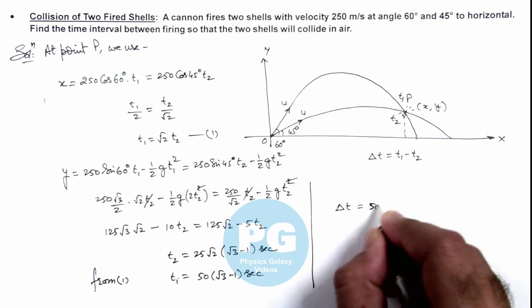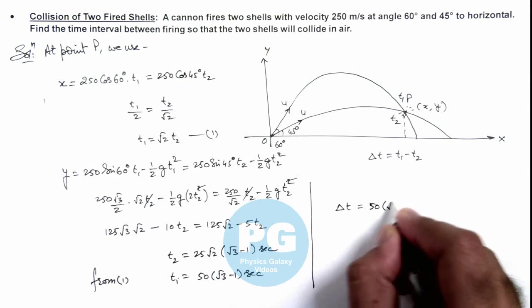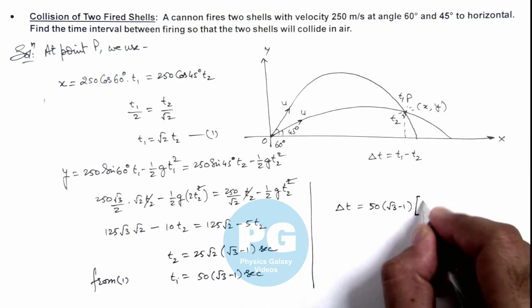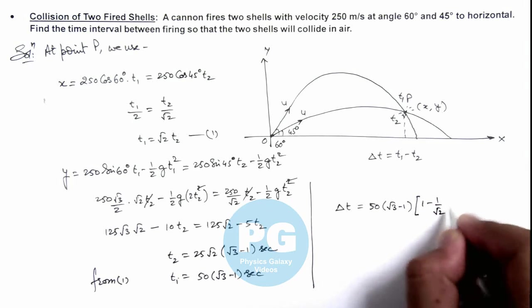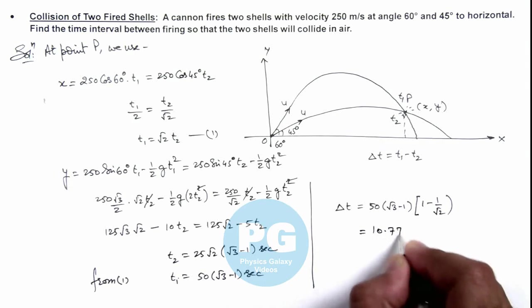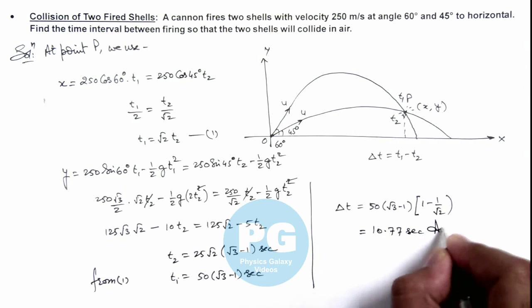So on substituting the values, this is 50(√3 - 1) × (1 - 1/√2). And numerically when you solve it, this will give you 10.77 seconds, that is the final result of this problem.